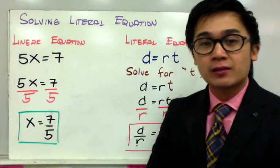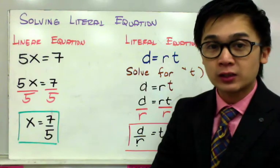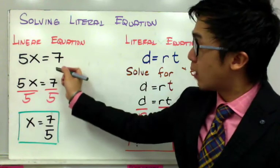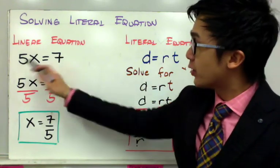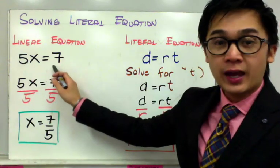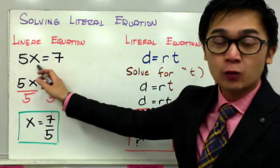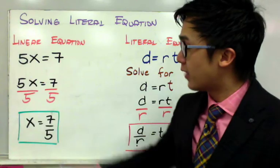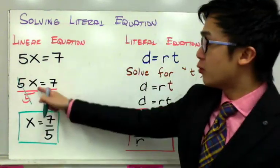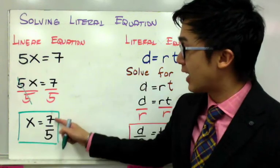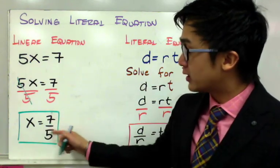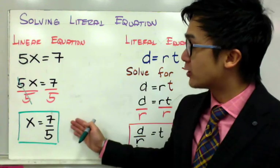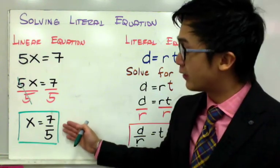Before I present the steps in solving literal equations, let's work on a simple linear equation where we need to solve for X. In this linear equation, 5X equals 7, and to get X by itself, we need one step: dividing both sides by 5 to get rid of 5. By doing so, X will be by itself and equal to 7 over 5. Since this is a fraction, you can leave it as a fraction.